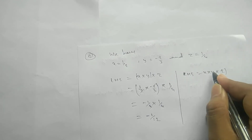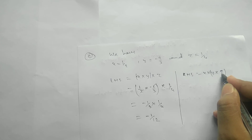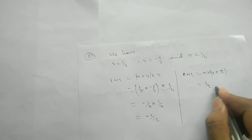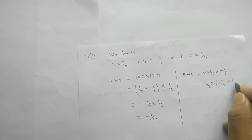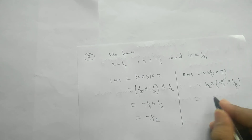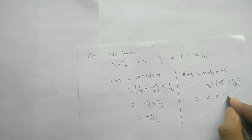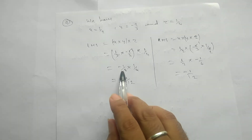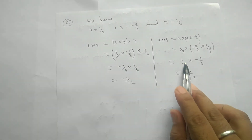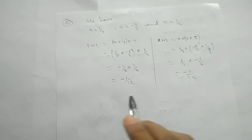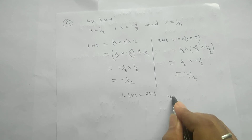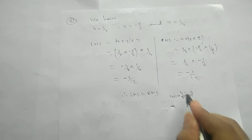For RHS, the order does not change — only the bracket changes; that is the associative property. So we compute x into (y into z): one by two into (minus two by three into one by four). Solving the bracket, we get minus one by six, and then one by two into minus one by six gives minus one by twelve. The ultimate result is the same, therefore LHS equals RHS — verified. Thank you.